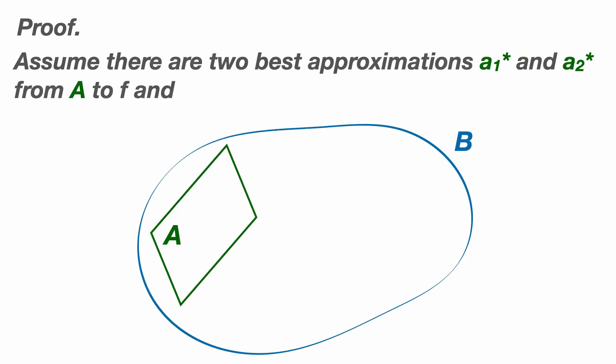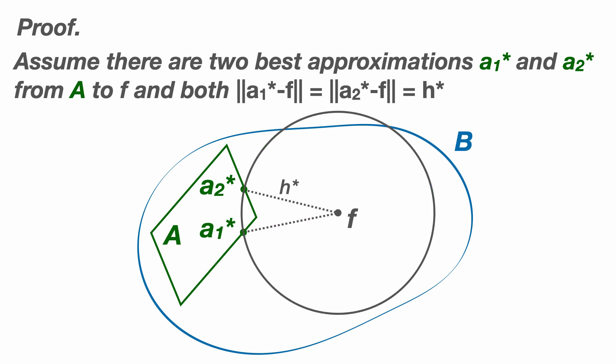Proving this theorem by contradiction is actually pretty simple. Let's assume the contrary is true and that there are two best approximations A1 star and A2 star. By definition they must both be the same distance from F and we'll call this distance H star.